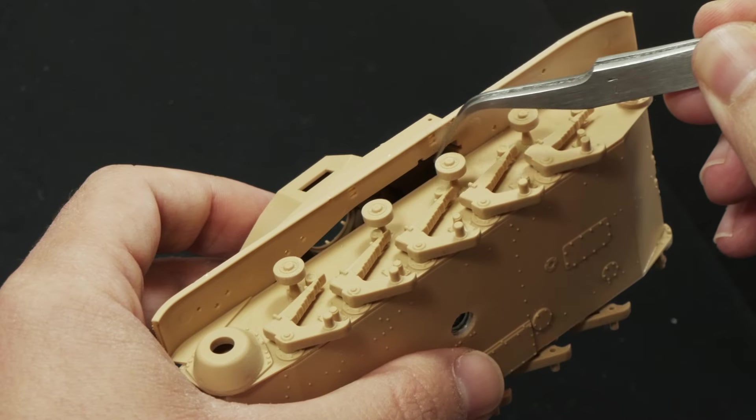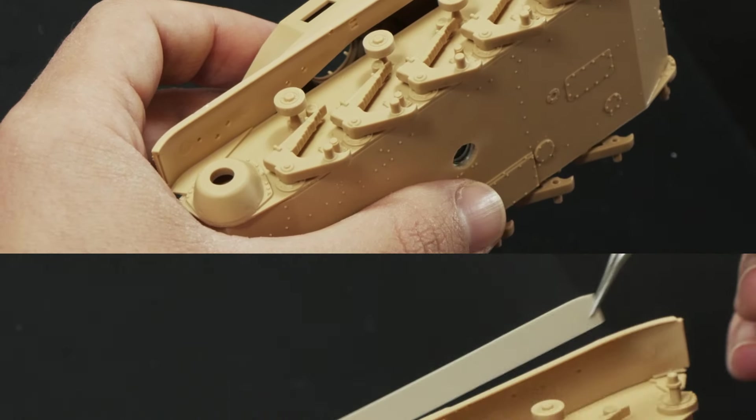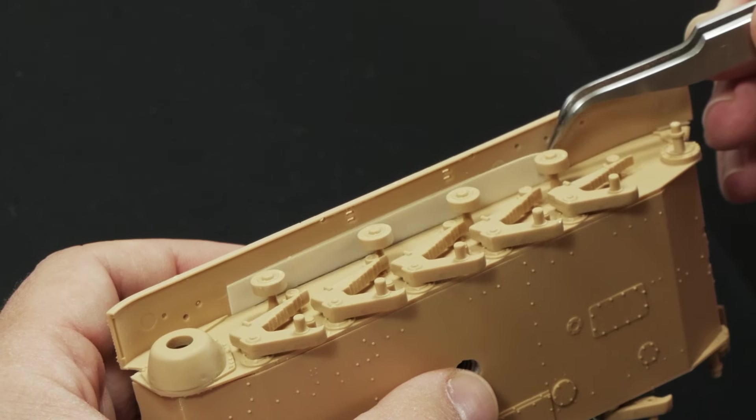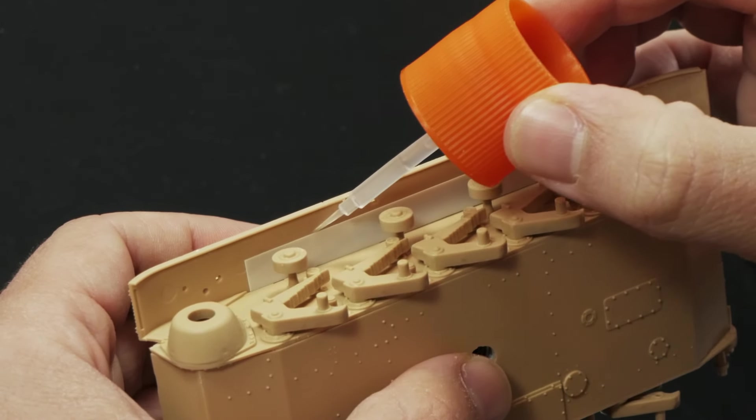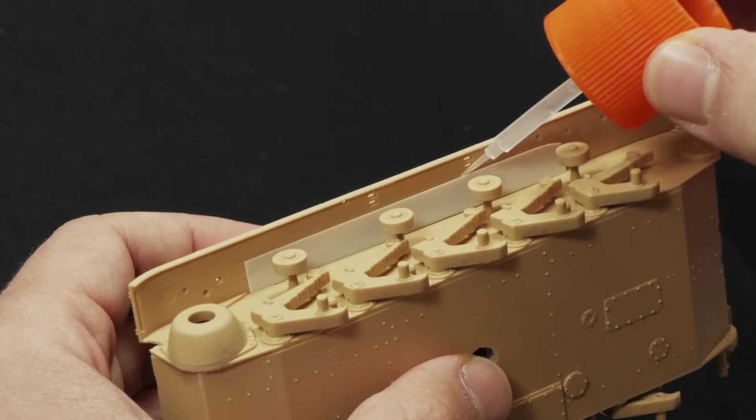It's very common to find kits with big gaps in the inner side of the fenders, but for this 1:35 scale it would be too visible. So I cut a strip of styrene and glued it with some extra thin cement.